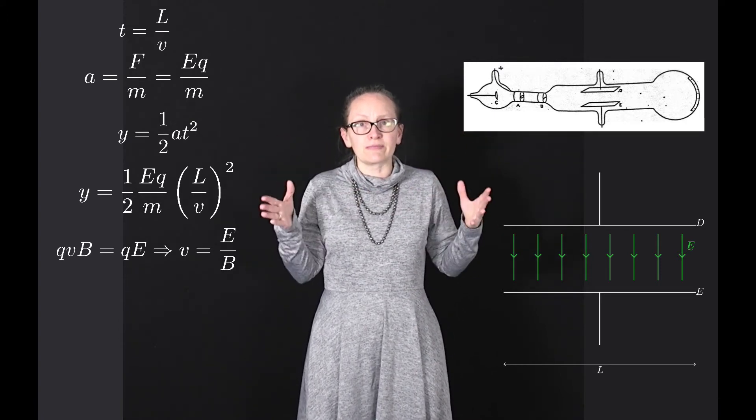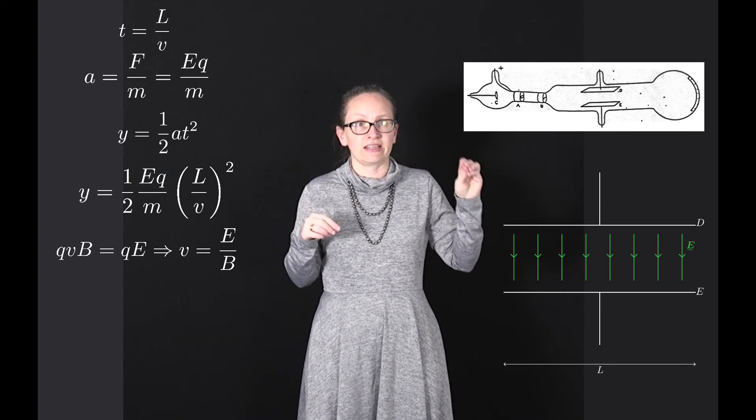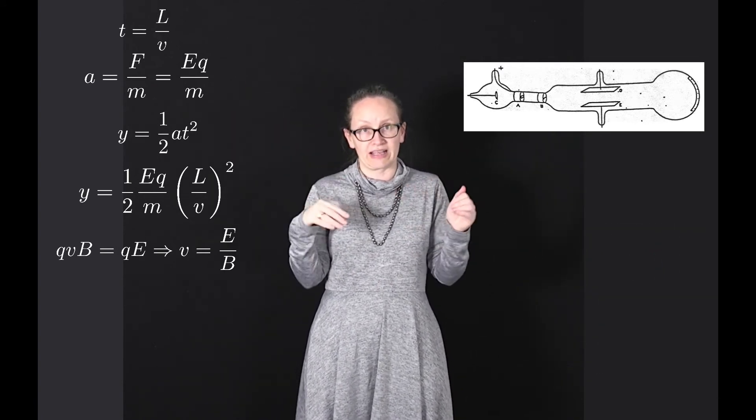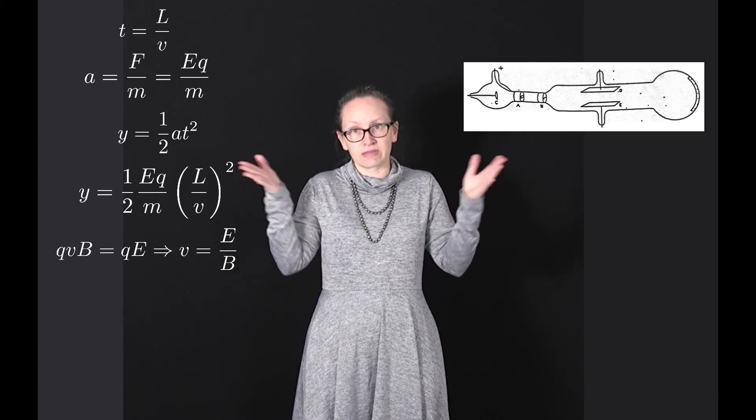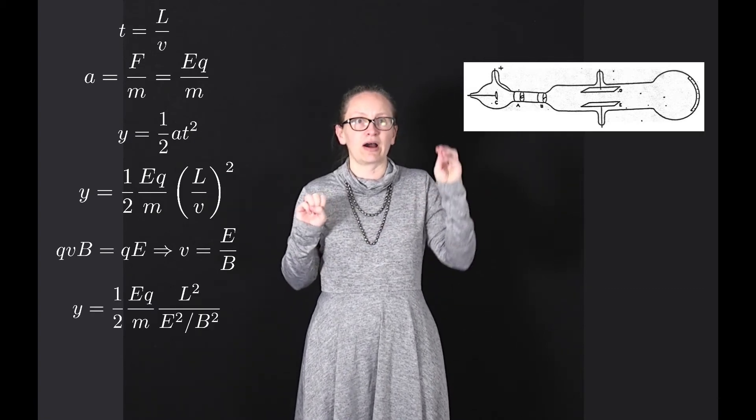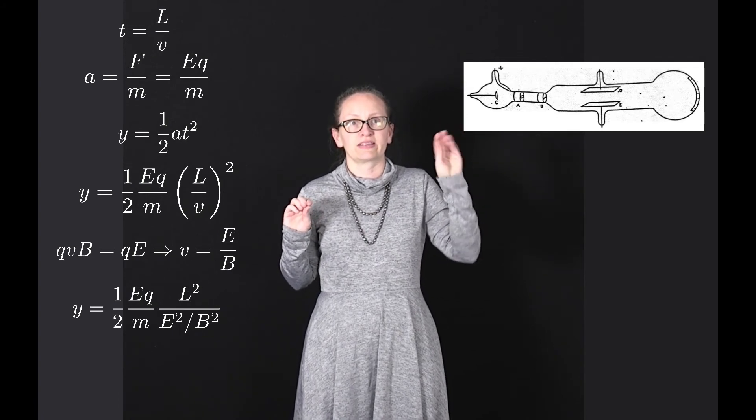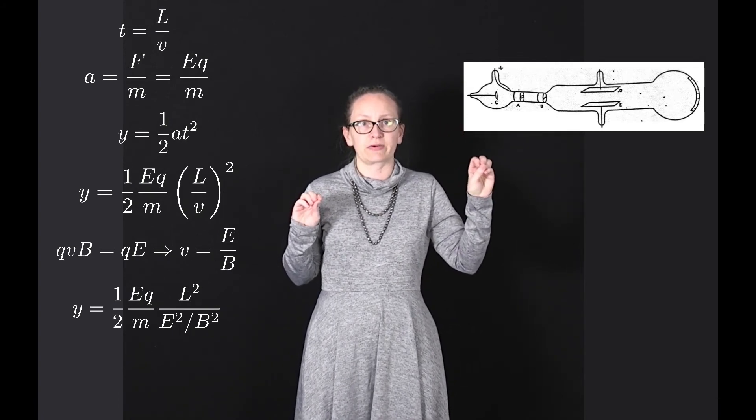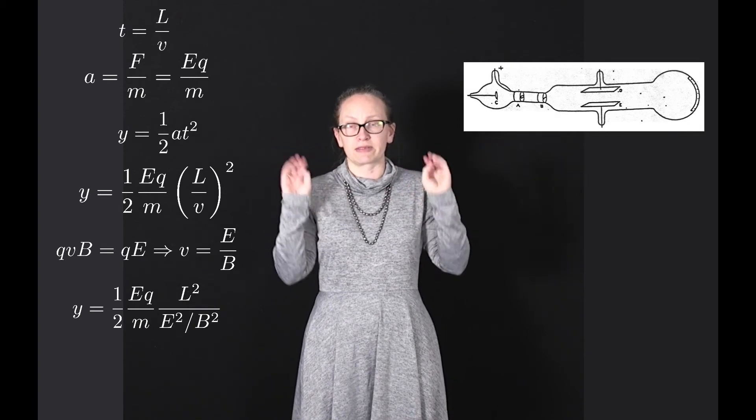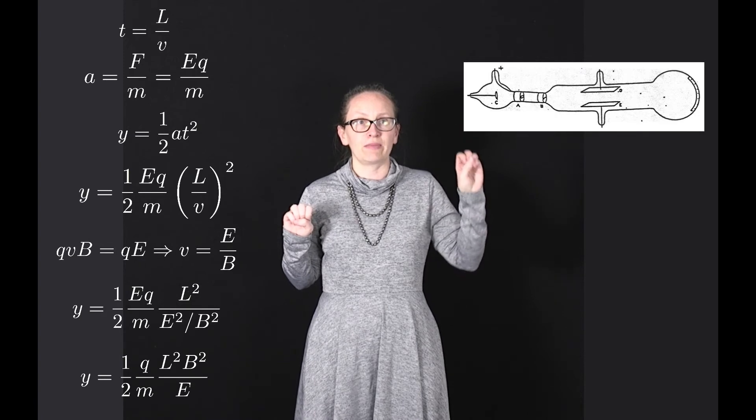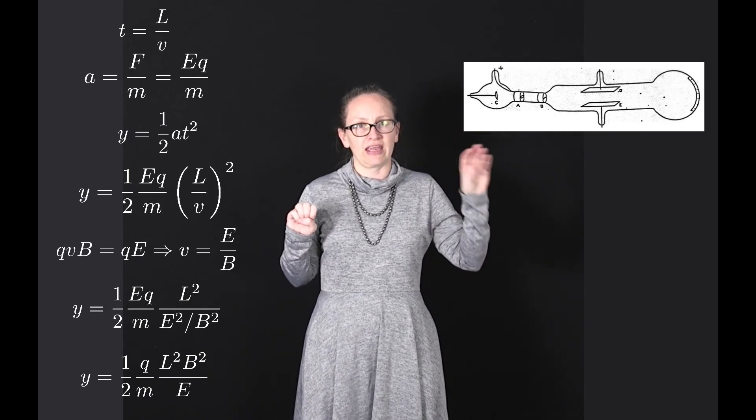He could then substitute this value for the initial velocity back into the deflection that he measured when there was no magnetic field. This becomes y equals one-half Eq over m times L squared divided by E squared over B squared. These electric field terms partially cancel, so this becomes one-half q over m L squared B squared over E.